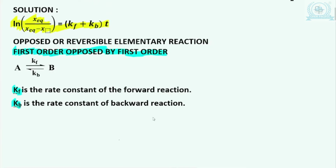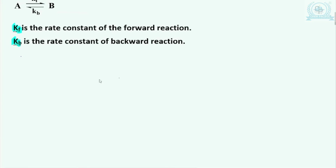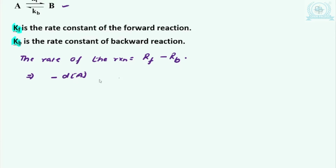The rate of the reaction is equal to the rate of the forward reaction minus the rate of the backward reaction. From the given reaction we can write the rate law: since A is the reactant, da/dt equals minus db/dt, which equals kf times concentration of A minus kb times concentration of B.